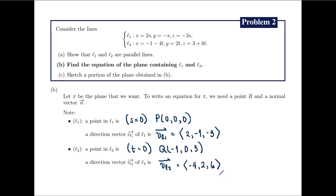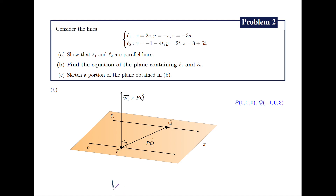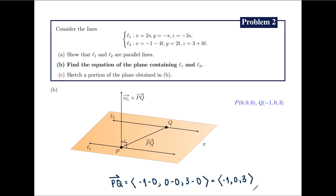We can take R to be either P or Q. In our case, let us take R to be the point P with coordinates 0, 0, and 0. You can check that R equals Q works as well. Next, to get a normal vector to pi, recall that we connected P and Q to form the vector PQ with coordinates negative 1 minus 0, 0 minus 0, and 3 minus 0. Simplifying, this is just the vector with coordinates negative 1, 0, and 3. Remember that we can take our normal vector N to be the cross product between v_L1 and the vector PQ.